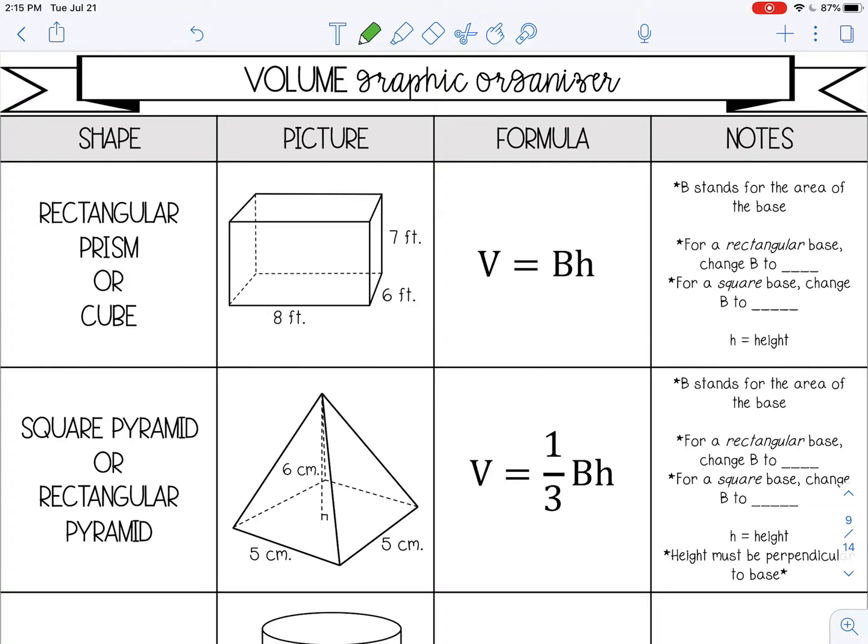So for a rectangular prism or a cube, like the one you see in this picture, the formula is either base times height, or you'll also see length times width times height for a rectangular prism. You may see length cubed for a cube, but all of those mean the same thing.